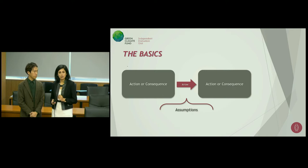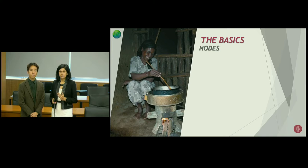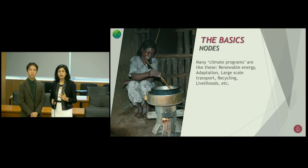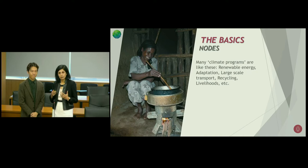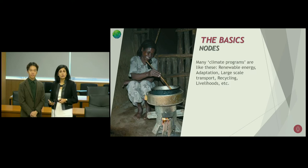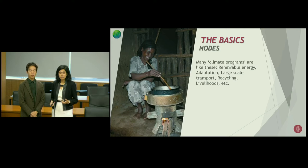I'm going to use the example of a very basic program that we see in climate change. We understand that many theories of change can become very complicated and can include very complex relationships. But it's a really good idea to start off with the basics. Many climate change programs can be illustrated through this theory of change — including renewable energy programs, adaptation programs, large-scale transportation programs, recycling programs, livelihoods, etc.